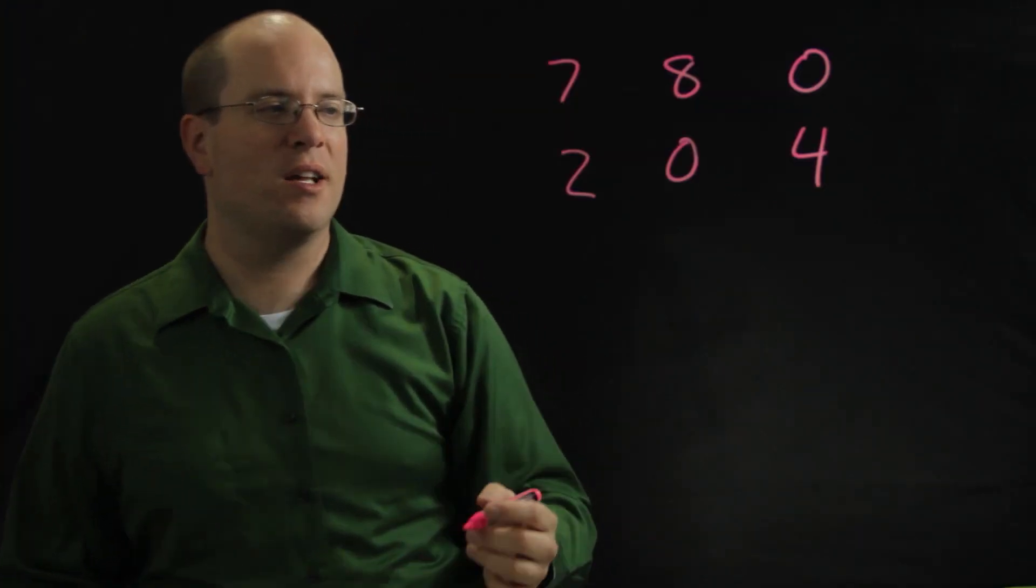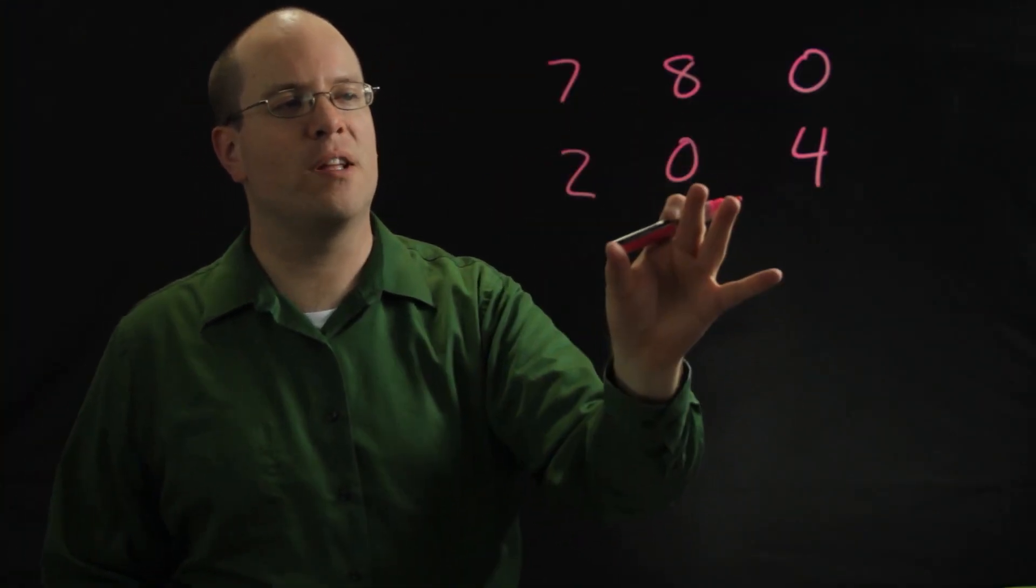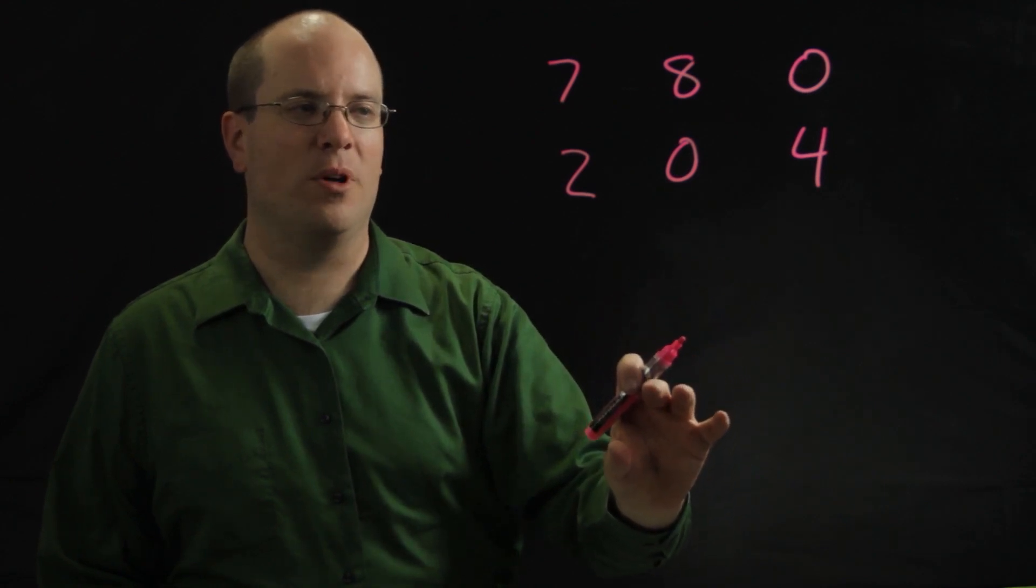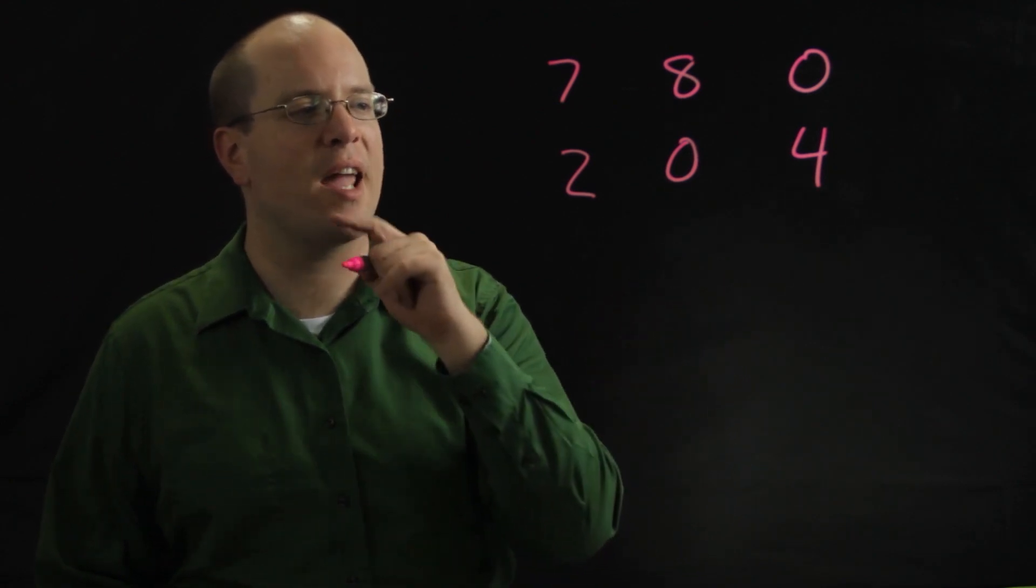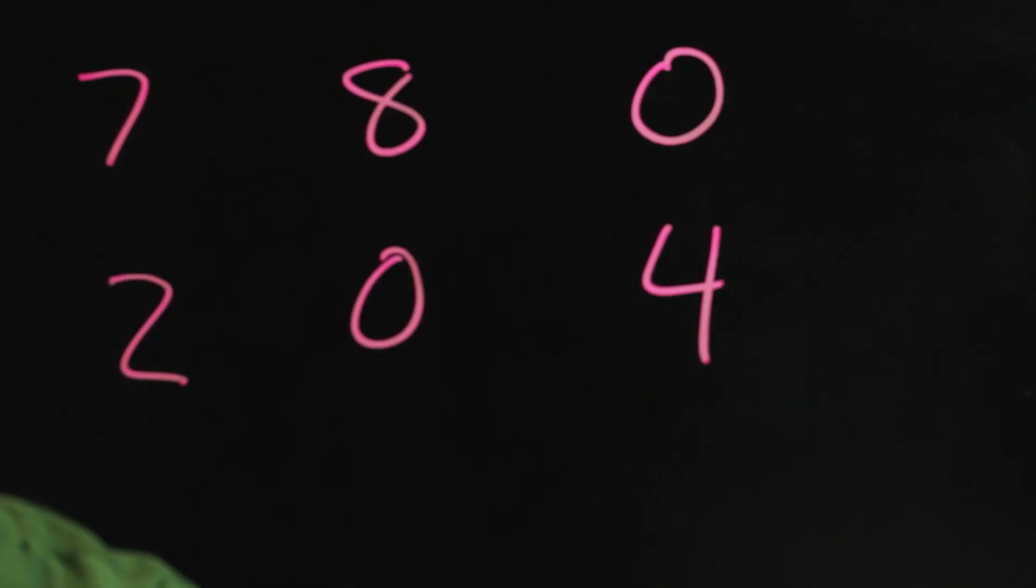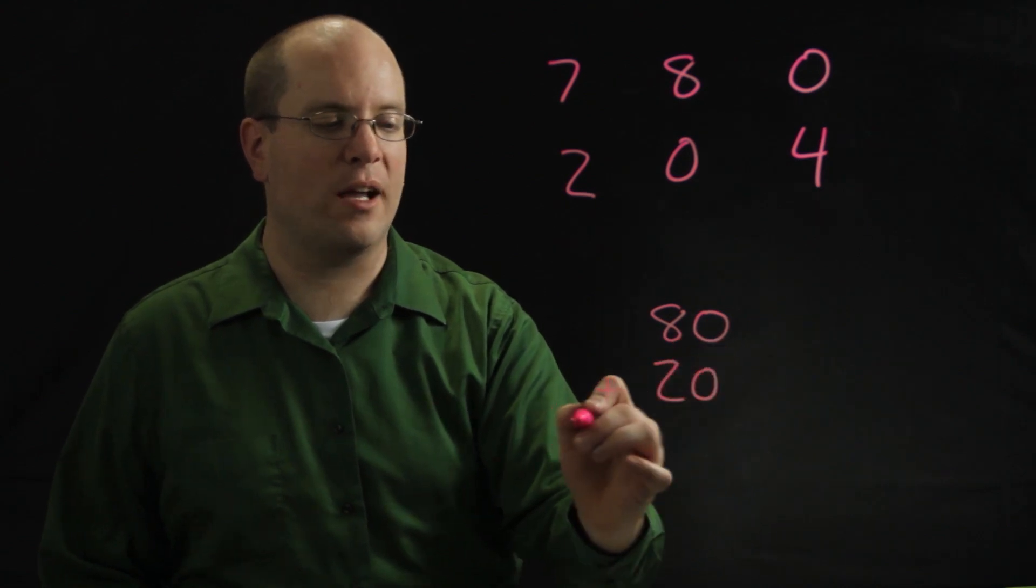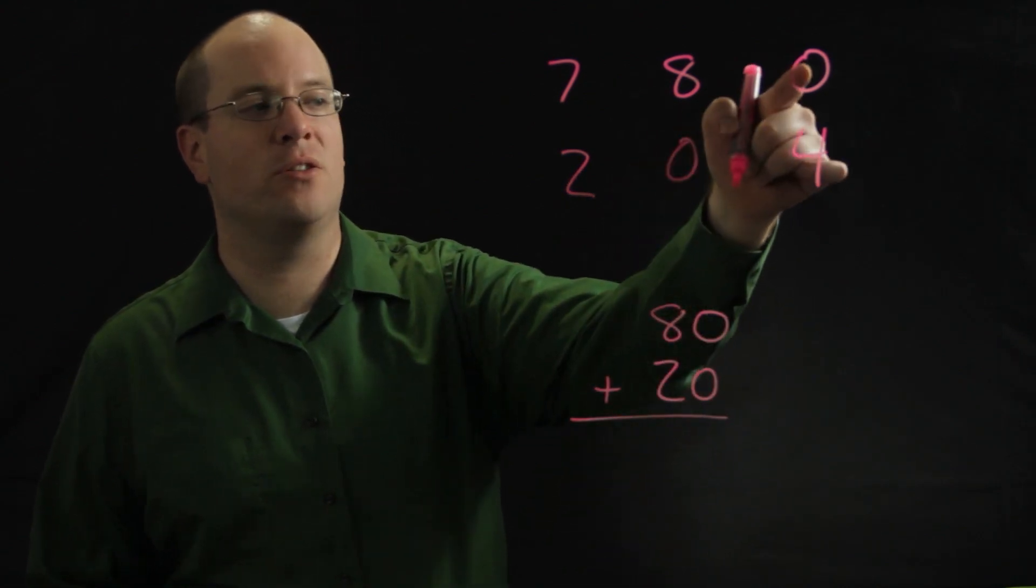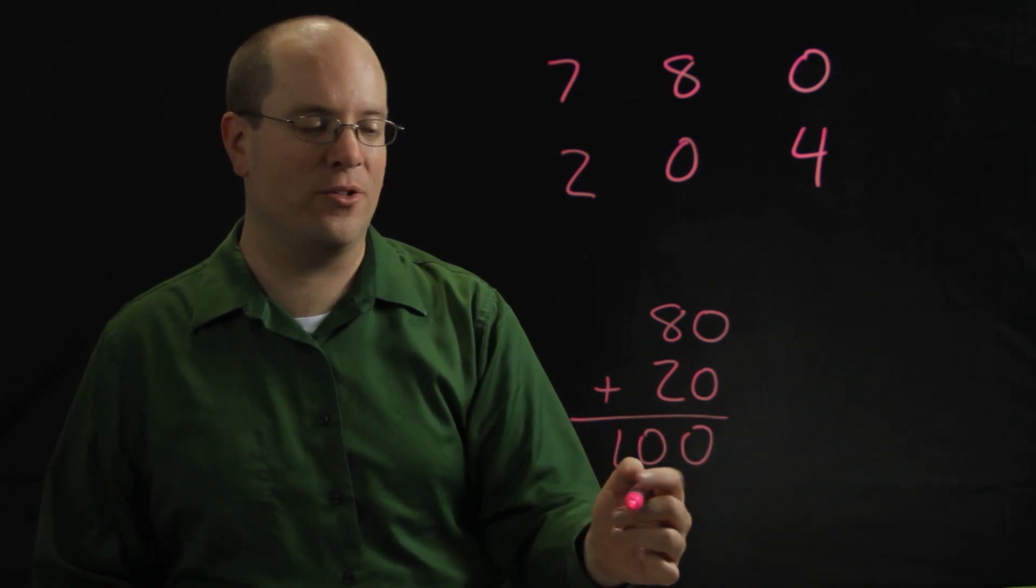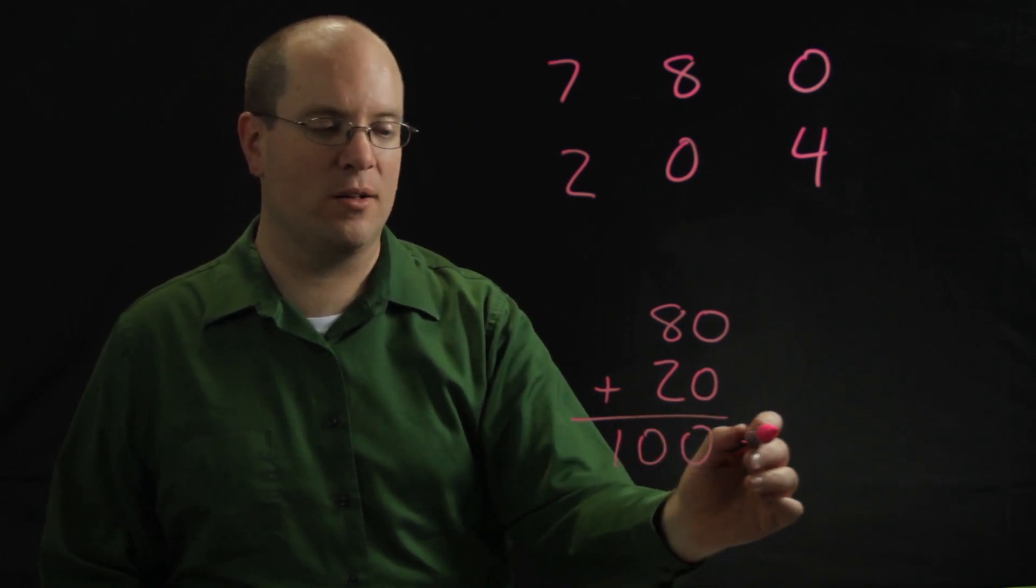Now the way Close to 100 works is I want to arrange four of these to make a two-digit addition problem that will get as close to 100 as I can. So for these six, maybe I would add 80 and 20. I can use the zero twice because I had two zeros. 80 and 20 is 100, so I got right on 100, so my score would be zero.